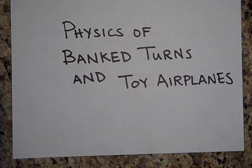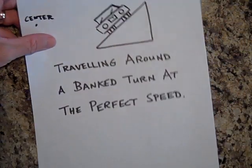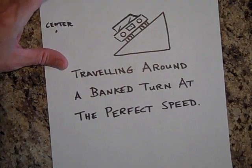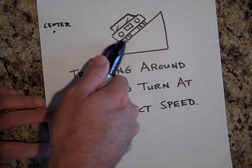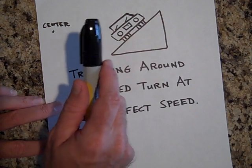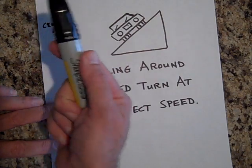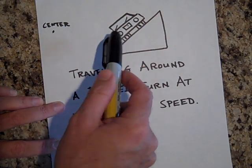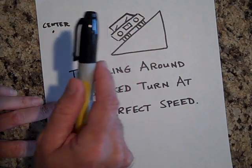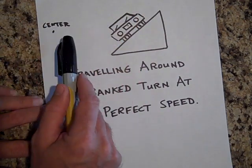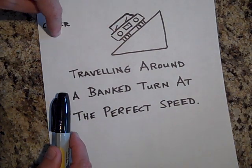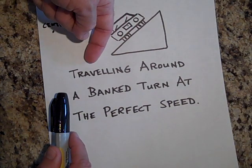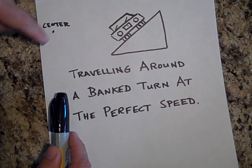First let me show you a car going around a banked turn. Here's the car on the banked turn going like that — we're watching it come at us and eventually go around in a circle, with the center of the circle here. The car is accelerating toward the center, not down the incline plane.